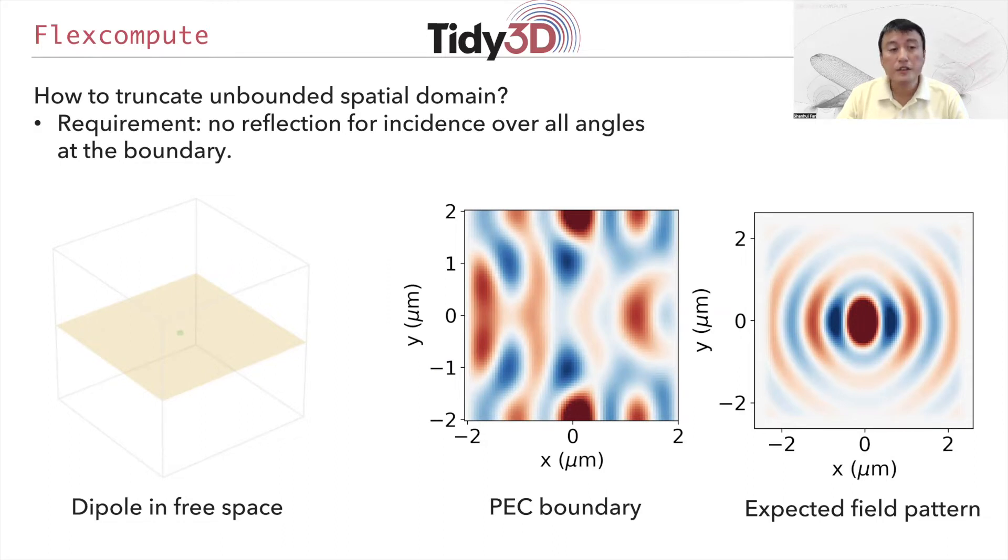In FDTD, we are simulating a system in a finite computational domain. So naturally the question is how you truncate this domain. In many simulations we would like to look at systems where the field can escape to far field or to infinity. For that purpose, at the boundary one would need a boundary condition where there's no reflection for every single angle of incidence.